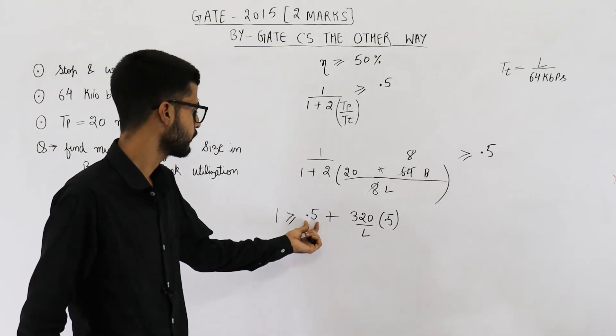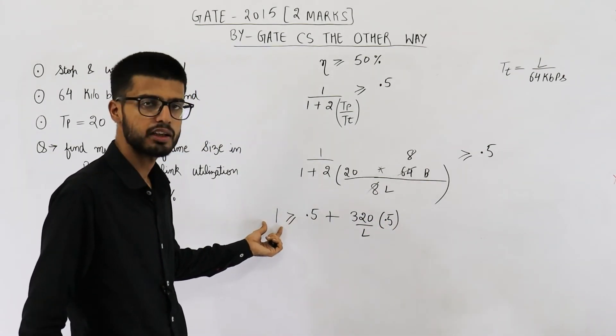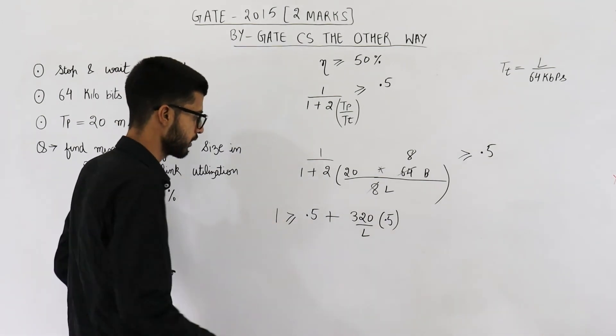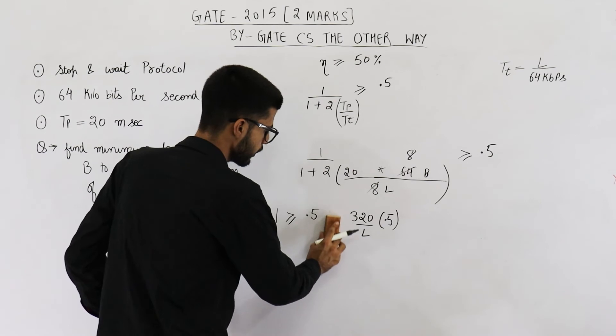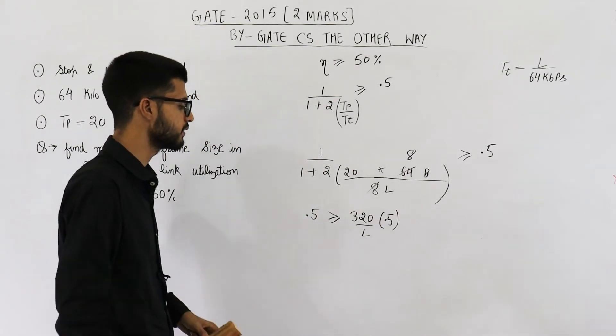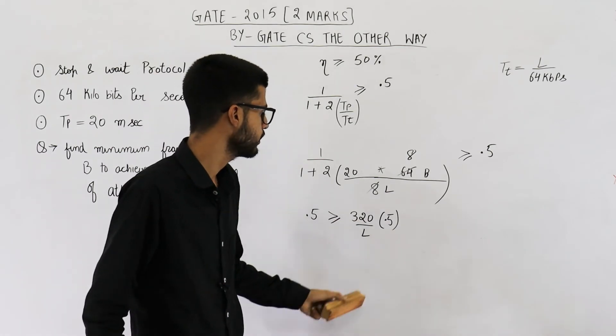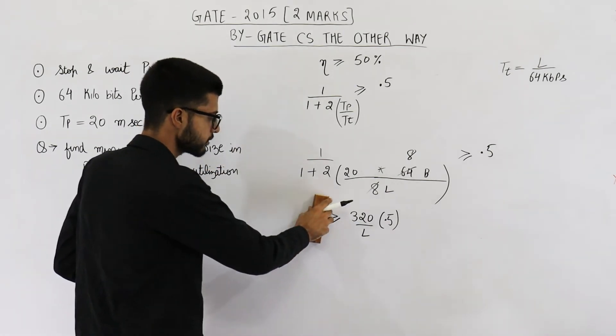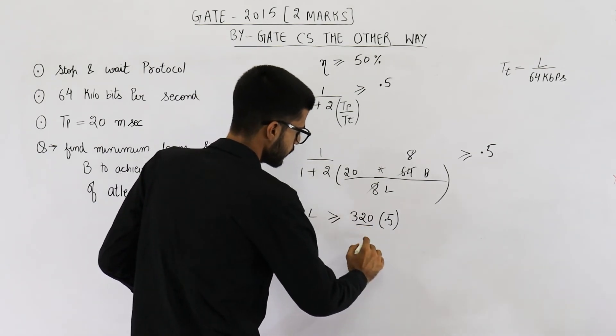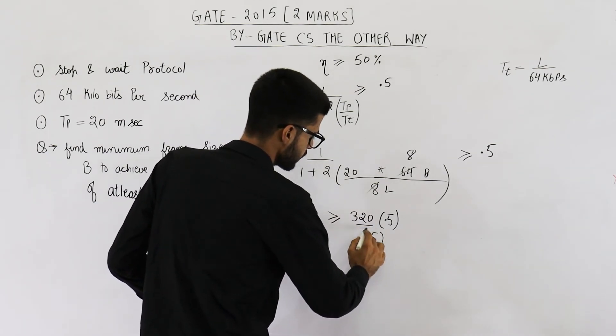So this 0.5 will become negative 0.5 when it's brought to this side. That means 1 minus 0.5 which is equal to 0.5 only. So next step will be 0.5 is greater than or equal to 320 by L. That means L will be greater than or equal to 320 by 0.5 into 0.5.